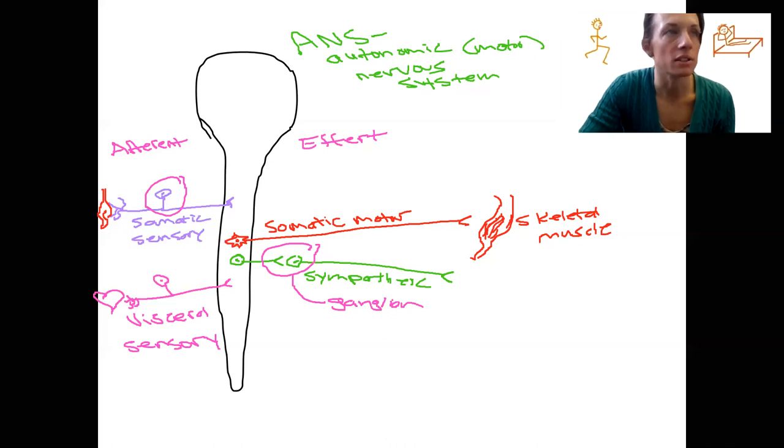So the sympathetic nervous system, of course, is going to innervate glands, smooth muscle. Heart is the easiest to draw. So I'm going to draw one of those here. Okay.